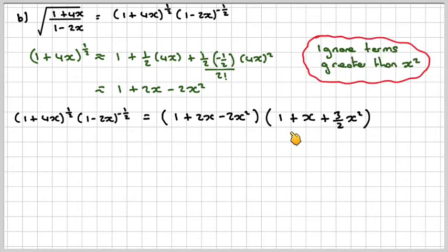So the first term will be 1 times all of that, so we're just going to get 1 plus x plus 3/2 x squared. The next one will be 2x, and we only need to do the first two, because we only need x squared. So it's going to be 2x plus 2x squared, and then the last term we just need to do this, so it's minus 2x squared.